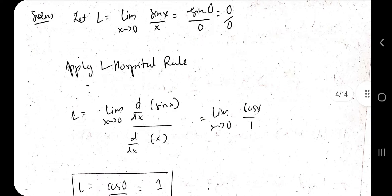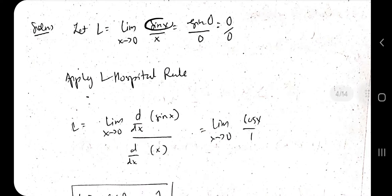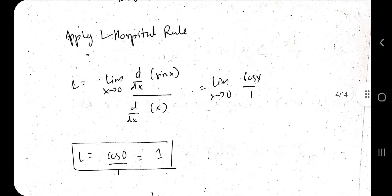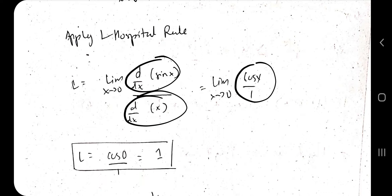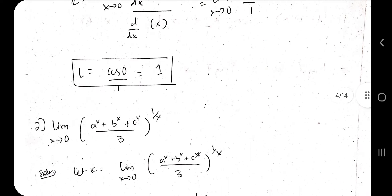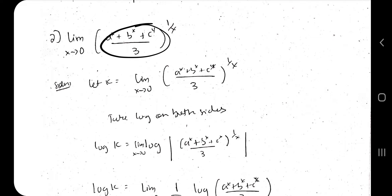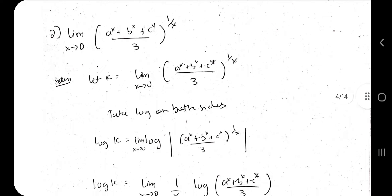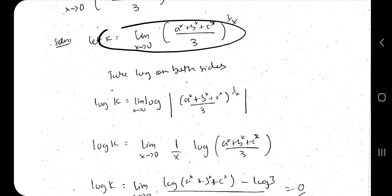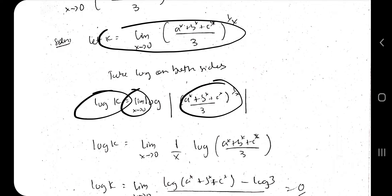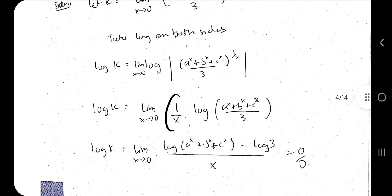The next topic is L'Hospital's rule. The question type is: find the limit, where the equation is given. Substitute the value of x as 0 and find the answer. If you get 0/0, apply L'Hospital's rule — differentiate the numerator and denominator with respect to x, then substitute x = 0 again and check if you get a constant value. For example, differentiating gives cos x / 1, and cos 0 = 1, so you get a valid answer. That's how you use L'Hospital's rule.